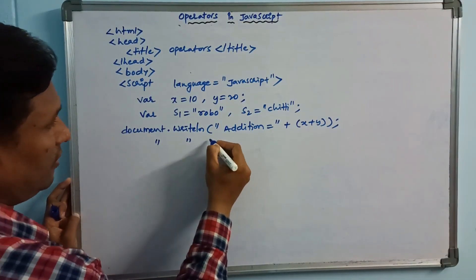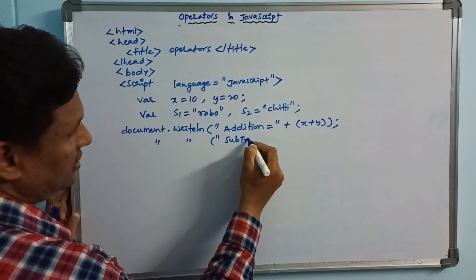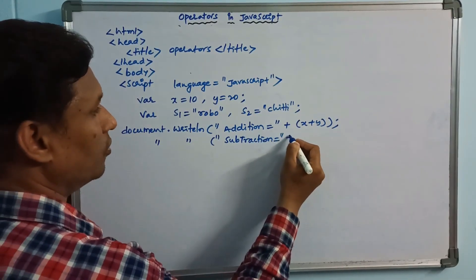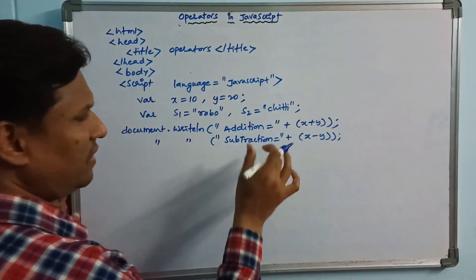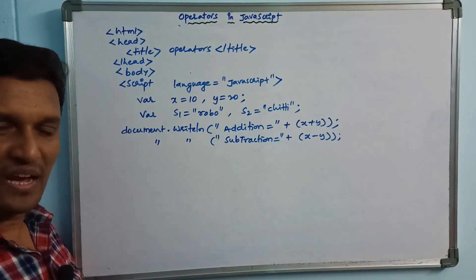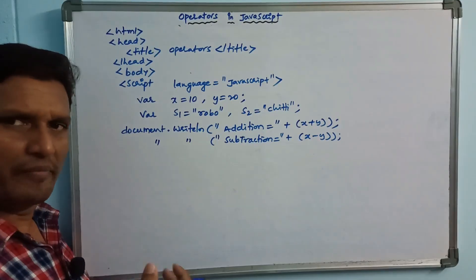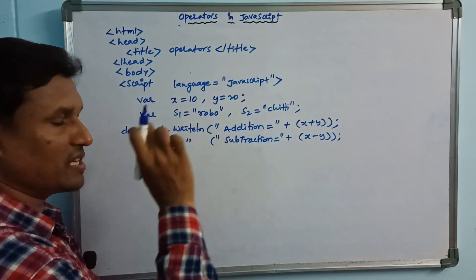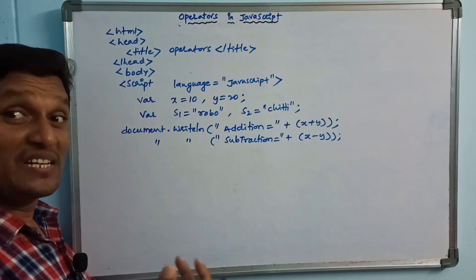Next, using document.write, we print the subtraction: subtraction equals x minus y. Then we demonstrate the increment operator — incrementing a variable by 1. Next, comparison operators.